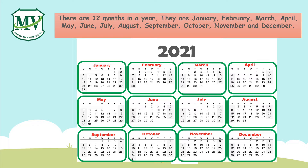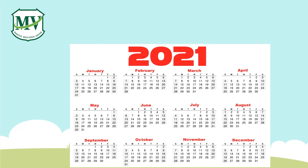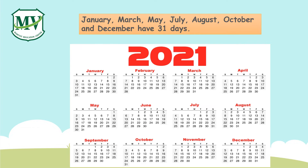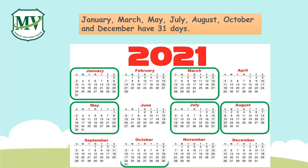You must have noticed that each month has different numbers of days. The following months have 31 days: January, March, May, July, August, October, and December.